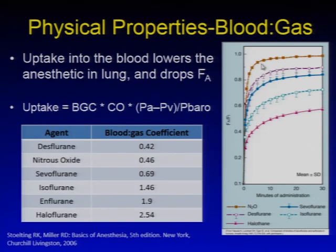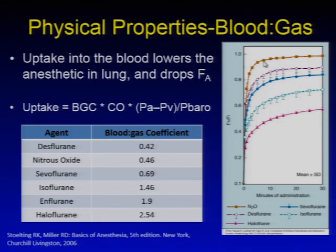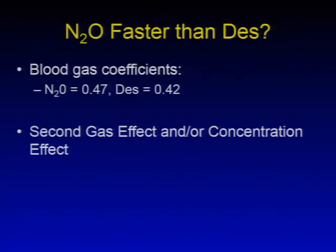What we can figure out from these curves is that it really matches the blood-gas coefficient. Desflurane and nitrous are very similar to each other; desflurane's coefficient is a little bit higher than nitrous. The speed of induction mirrors these coefficients — halothane has the highest and is the slowest agent. The comparison between nitrous and desflurane requires a little more consideration, and the answer really is the concentration effect, or its special application, the second gas effect.